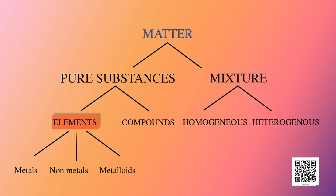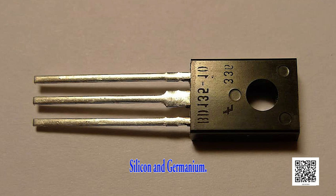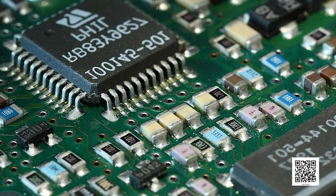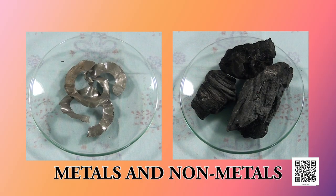All of them possess their characteristic properties. Metalloids — probably a new term to hear — own properties of both metals and non-metals. Typical examples are silicon and germanium. They are used mainly as semiconductors, a component in transistors. In the present lesson, our focus of learning is metals and non-metals.